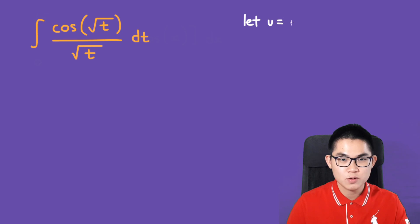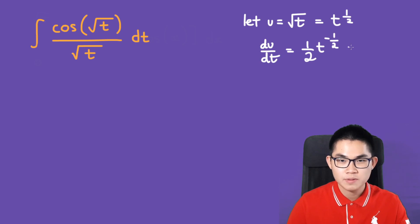Let u equal the square root of t, which is basically t to the power of 1/2. Then we differentiate it, so du/dt is going to be 1/2 times t to the power of negative 1/2. That's basically 1 over 2√t.